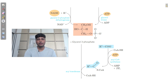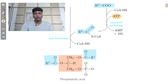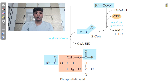First, the fatty acid gets attached to coenzyme A, and once attached, it can then bind to glycerol-3-phosphate. As you can see in this picture, two fatty acids are attached to glycerol-3-phosphate. The resulting structure is known as phosphatidic acid, because there are two fatty acid chains and on the third carbon there is only a phosphate group. This resultant product is called glycerophospholipid or phosphatidic acid.